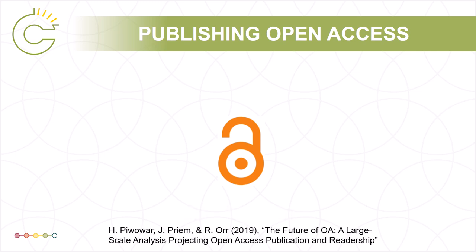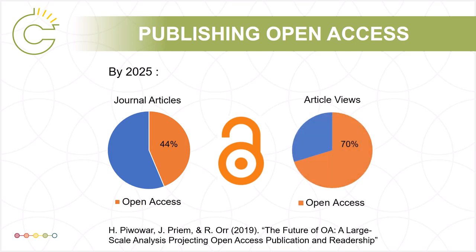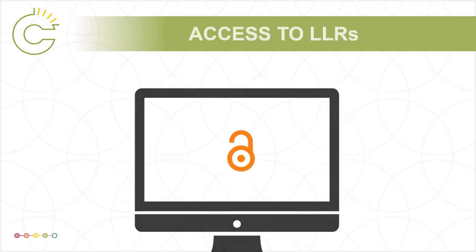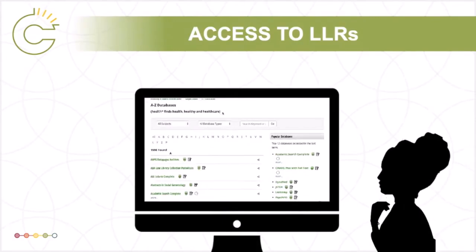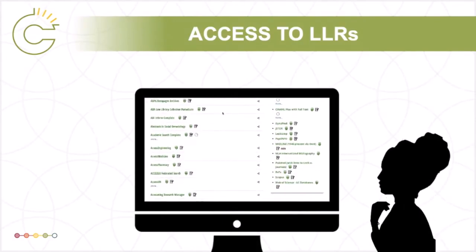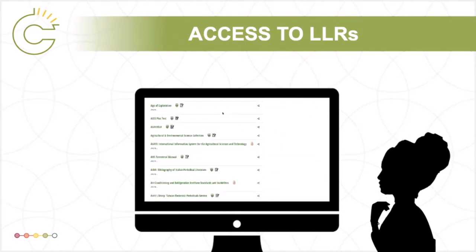In fact, an article published in October 2019 estimated that by 2025, 44% of all journal articles will be available as open access, and 70% of article views will be open access articles. The declining relevance of closed access articles is likely to change the landscape of scholarly communication in the years to come. While more academic authors are choosing to make their articles and books freely available on the open web, there are still millions of articles and books that are only available via licensed library resources.